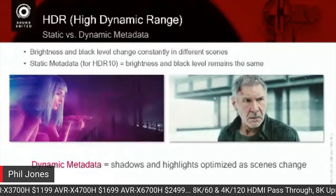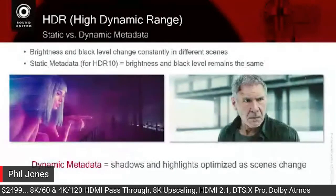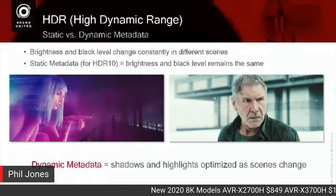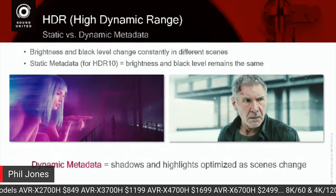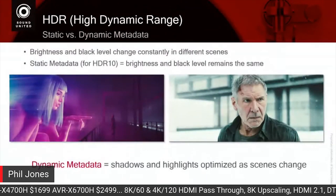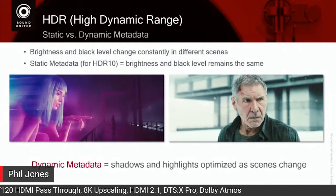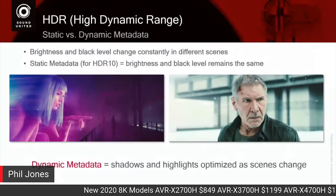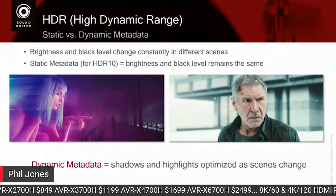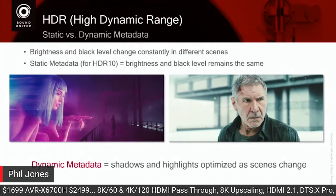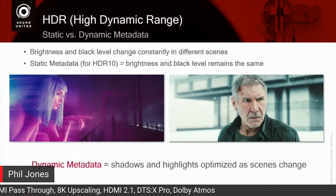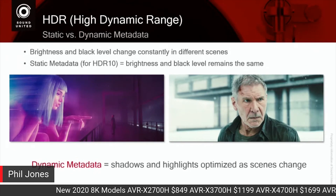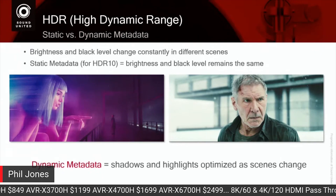HDR10 just has static metadata, which means it looks at the brightest pixel in the entire movie — say, a scene with Harrison Ford — and the brightest frame, perhaps 3,700 nits peak with an average of about 475 nits. The TV tries to adapt its color and brightness parameters to match that frame. However, when a dark scene appears, the TV is using that bright information to optimize it, which can make scenes look darker and colors look flat. With dynamic metadata, every frame and scene provides that information to the TV so it can adapt itself.